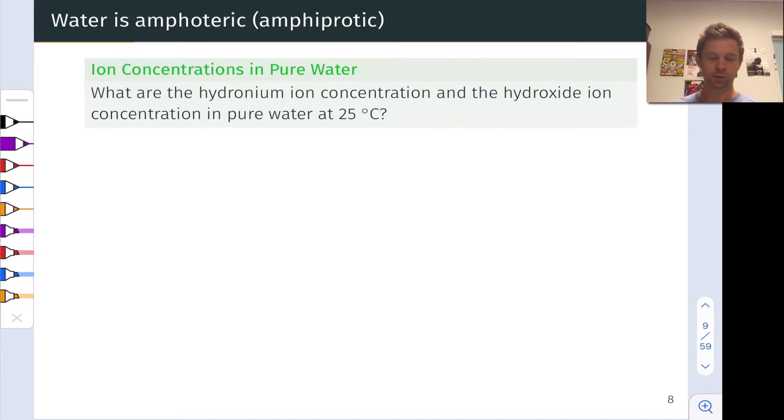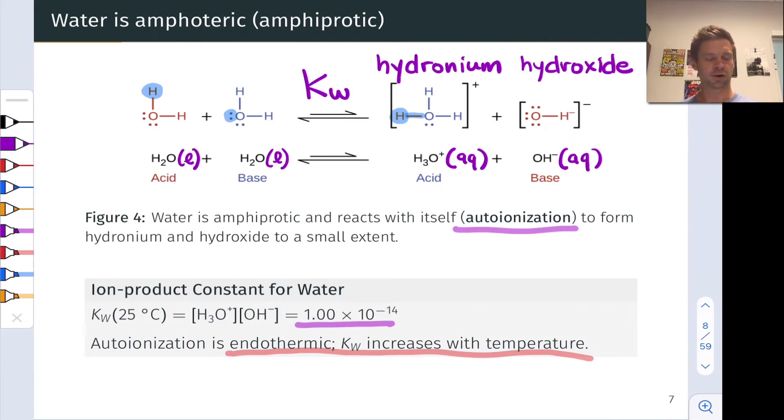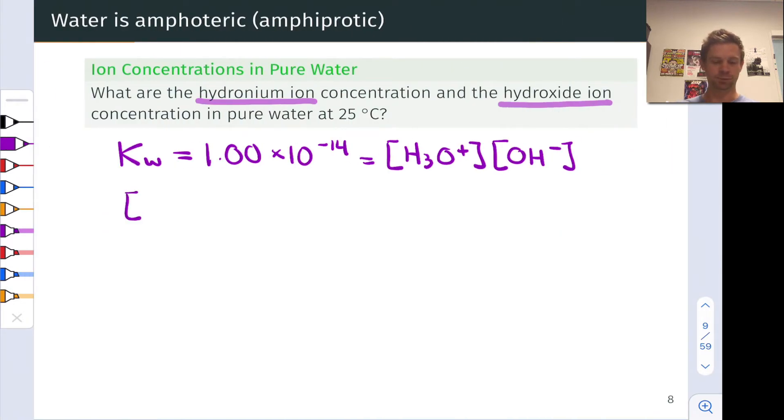Now one thing we can do with Kw is determine the concentrations of hydronium ion and hydroxide ion in pure water at 25 degrees C. We know that the value of Kw at this temperature is 1 times 10 to the negative 14th. We also know that this equals the product of the concentration of hydronium and hydroxide. If we think about how those species are generated, for every one hydronium molecule we get, we get one hydroxide molecule. The stoichiometric ratio is 1 to 1 and that means that these two concentrations must be equal to each other.